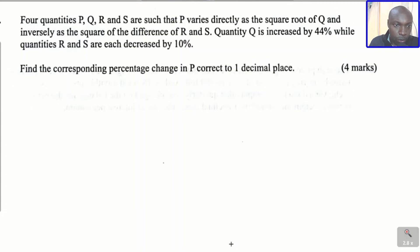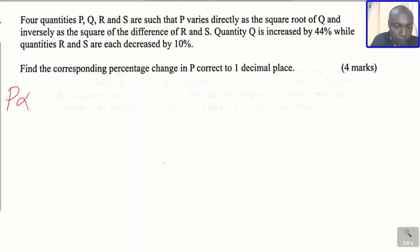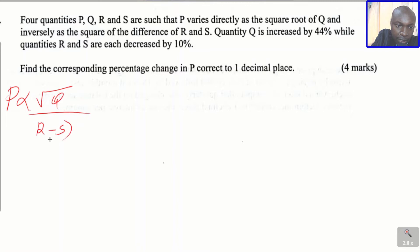The first thing you're going to do is write the relationship connecting these four variables. So P varies — that is the sign of proportionality — P varies directly as the square root of Q and inversely as the square root of the difference of R and S. That is the difference of R and S, then the square root.